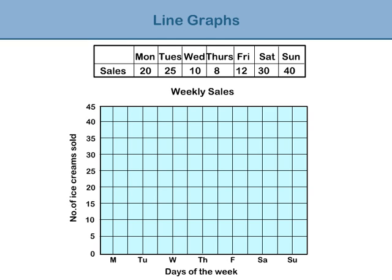Now we are ready to start marking the data from our table. There were 20 ice creams sold on Monday — read up the y-axis to 20, then move right until you find the line for Monday and plot a point. There were 25 ice creams sold on Tuesday — read up to 25, move right to Tuesday's line, and plot a point. Now join the Monday and Tuesday points with a single straight line. Plot 10 ice creams for Wednesday, then draw a line between Wednesday's point and Tuesday's point. Continue through the days of the week, plotting the number of ice creams sold and joining each point to the previous day's point. Once all the points have been plotted and joined together, we have completed our line graph.